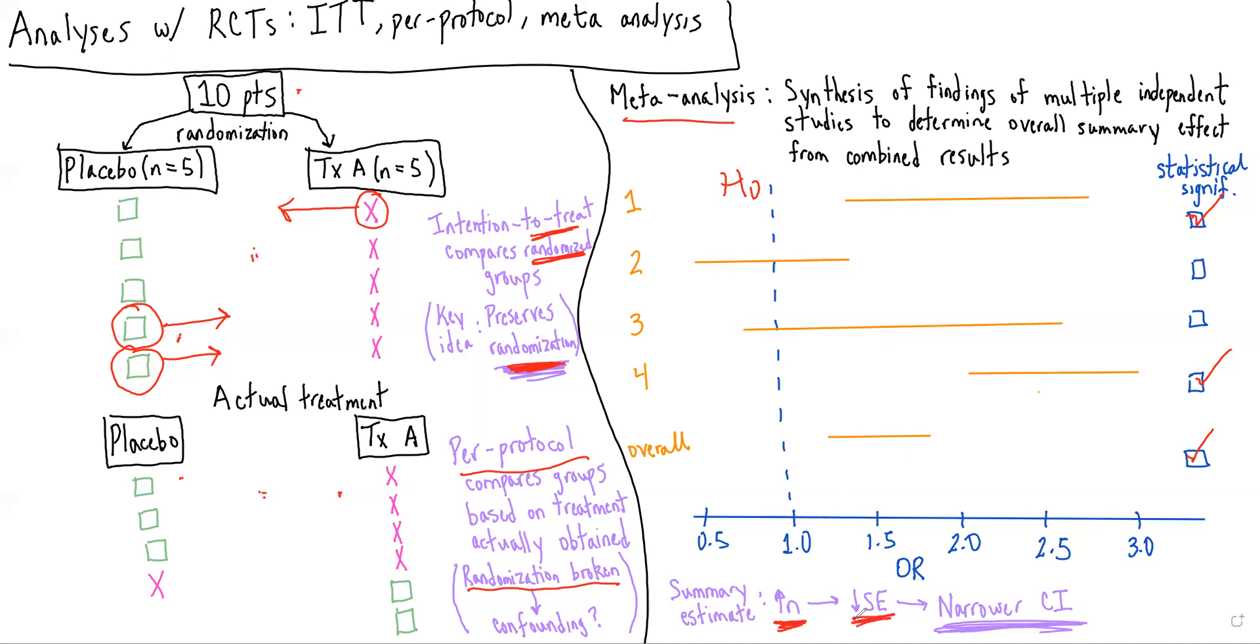And this really highlights something that we talked about in the previous lecture, which is that as our sample size increases, we expect our standard error to go down because our standard error has the square root of the sample size as a denominator. And because our standard error has gone down, we have a narrower confidence interval.